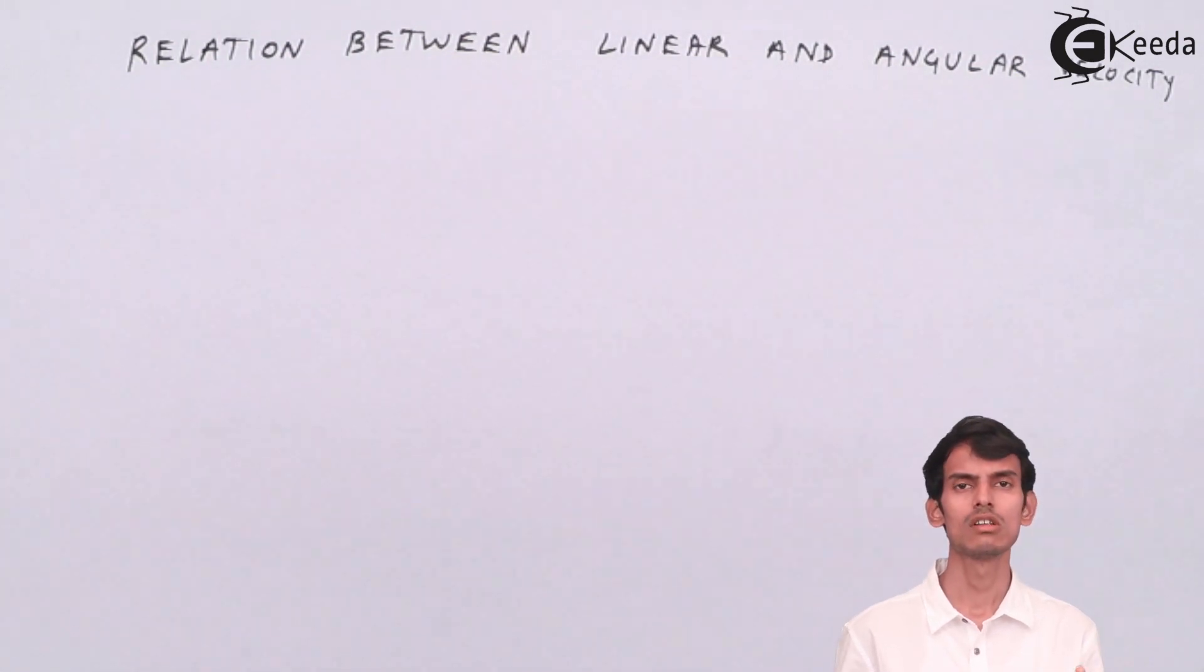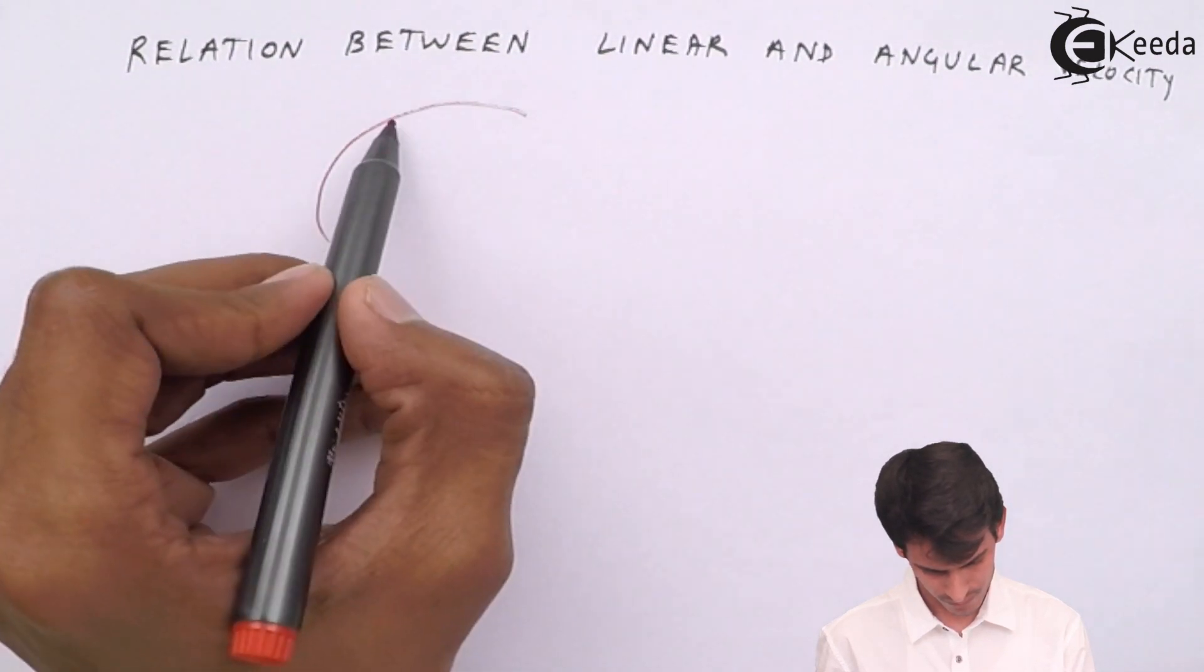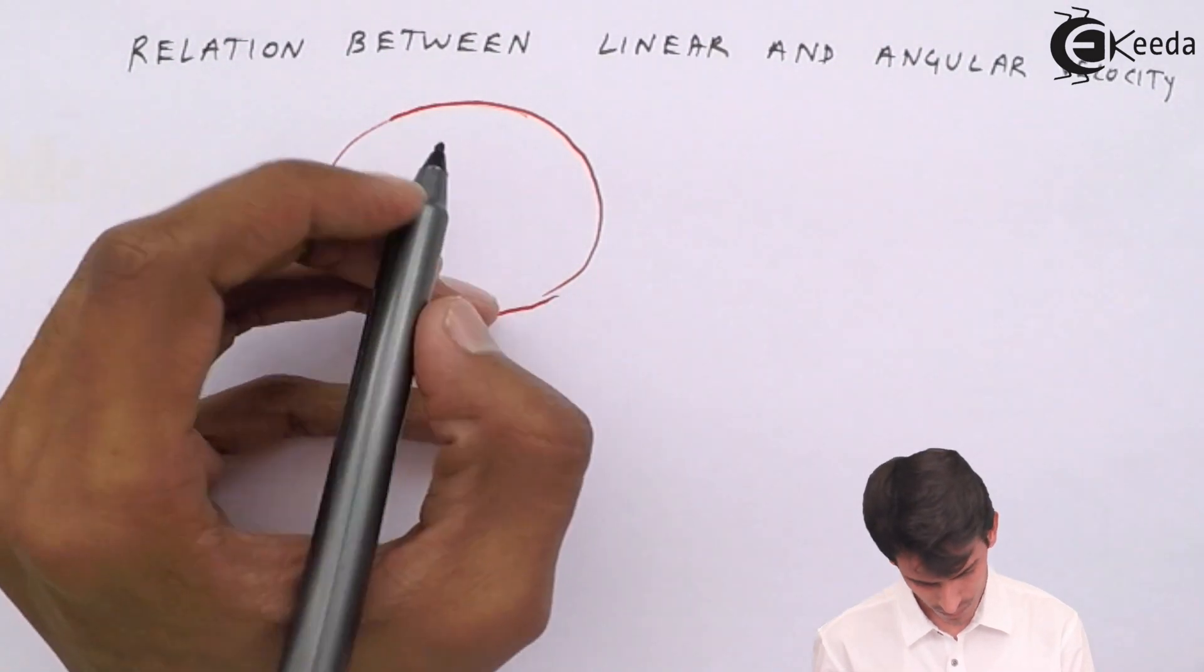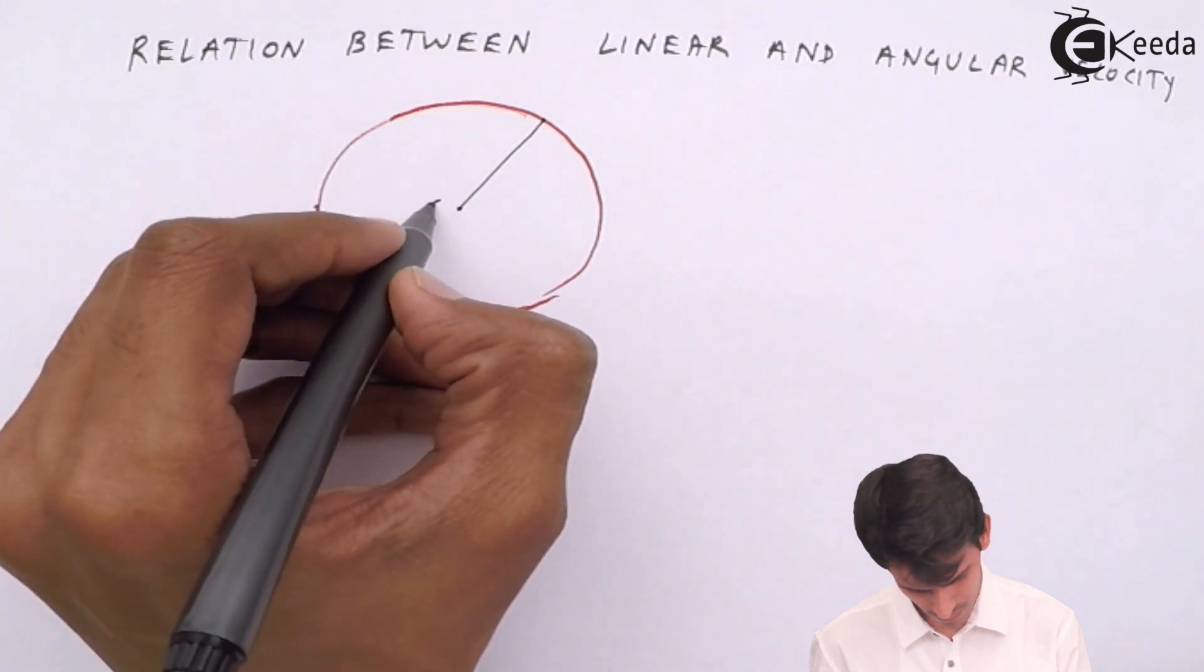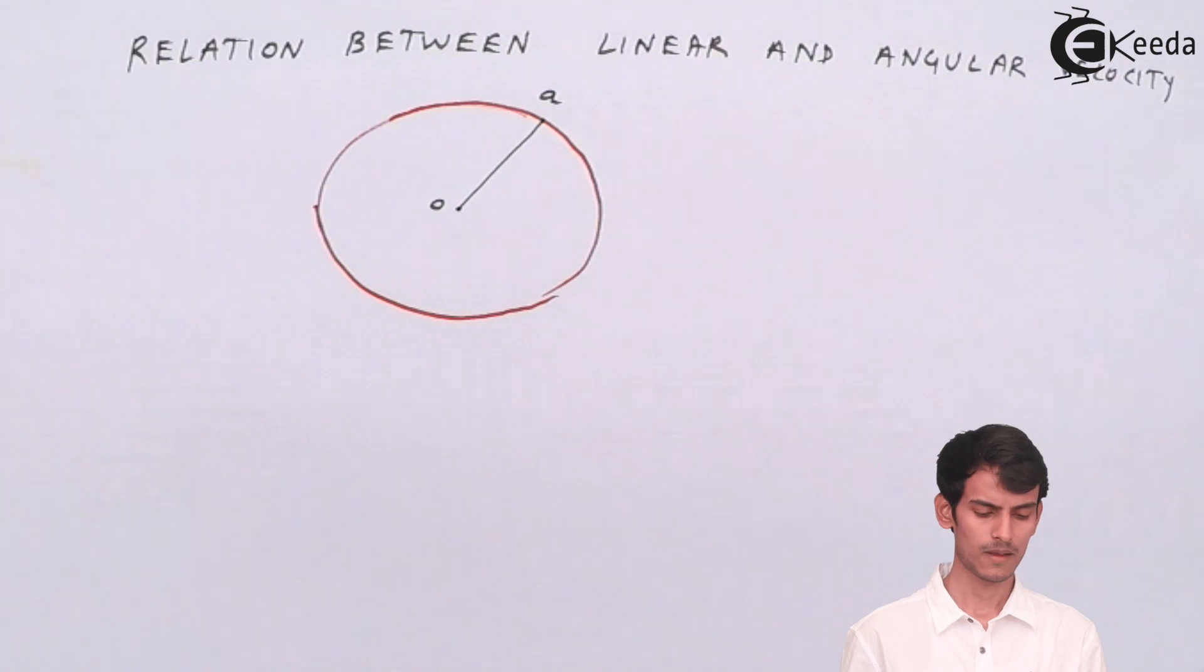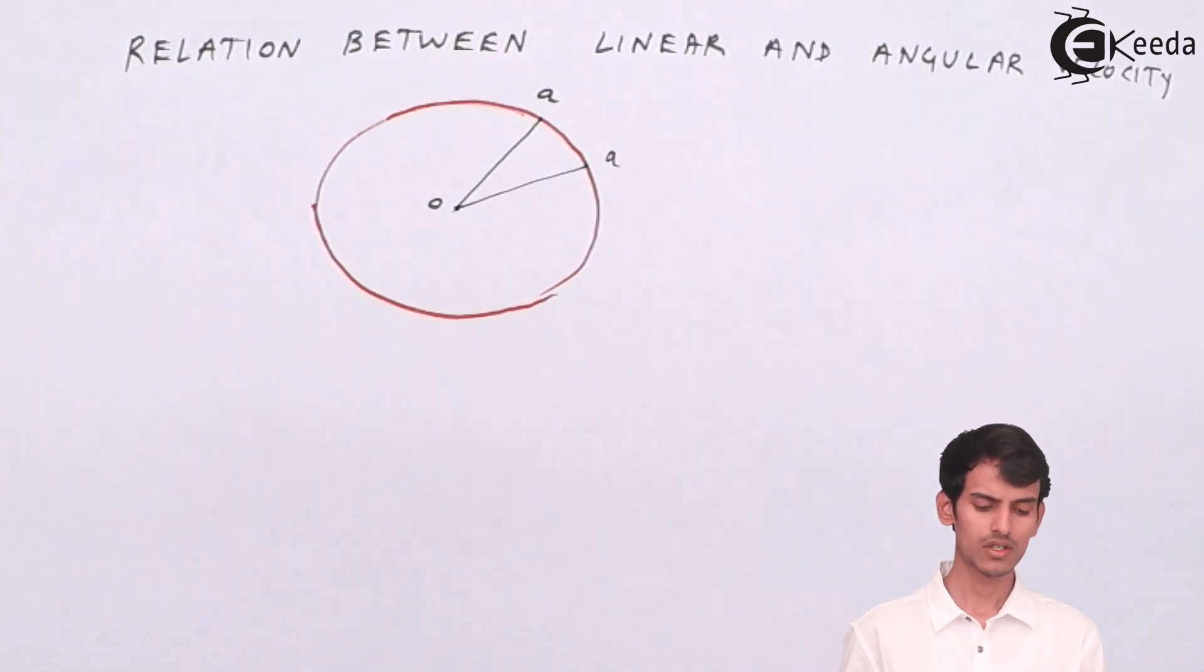For that we need to just assume a small motion of a curve. Just imagine a rod OA which is performing a circular motion. We will imagine a small angular displacement. Suppose the rod OA moves from this position to the second position as you can see in the diagram. It takes some amount of time to go from the first to the second position and it will cover some angle.